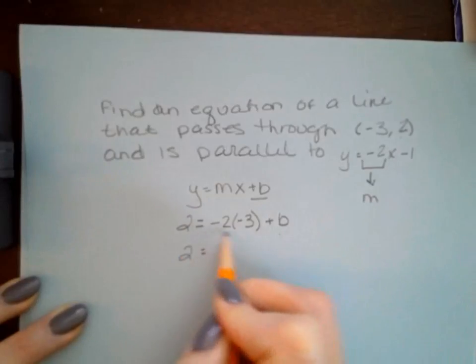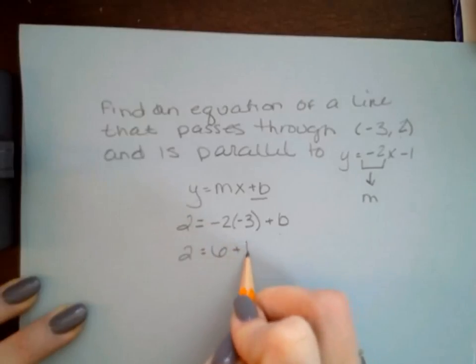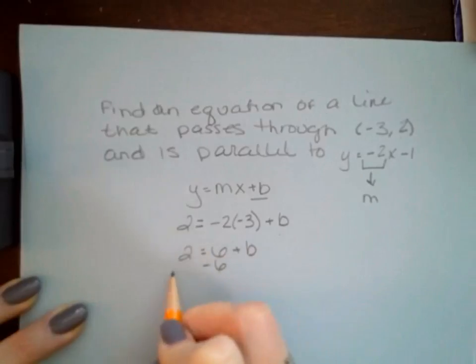2 = -2 times -3, which is 6 + b. Since b is not by itself, we're going to subtract 6 from both sides. We find that b = -4.